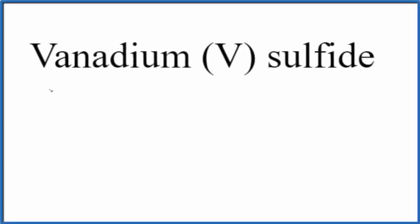In this video we'll write the formula for vanadium (V) sulfide. The first thing we'll do is write the element symbol for vanadium, that's V. That's a little confusing because we have a V here as well, but this V is a Roman numeral. It means the vanadium is going to be 5+. Sulfide is from sulfur.